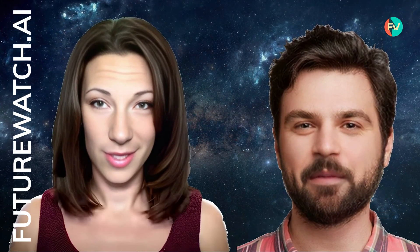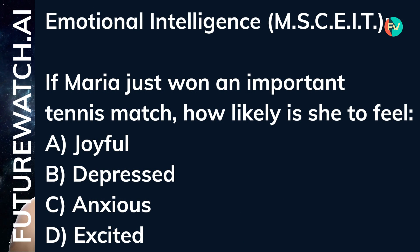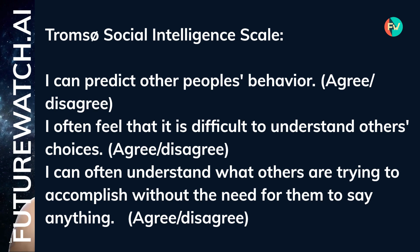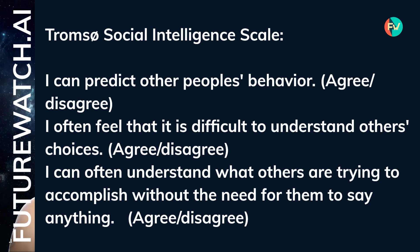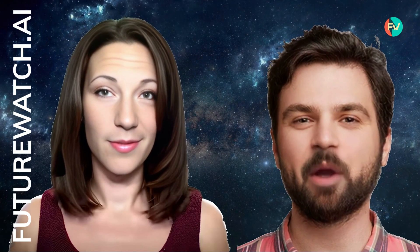Can you give me an example of some test questions? Here are a couple of questions from tests that aim to measure aspects of emotional and social intelligence. Emotional intelligence, MSCEIT test: If Maria just won an important tennis match, how likely is she to feel — A. Joyful, B. Depressed, C. Anxious, D. Excited. Social intelligence, using the Tromso Social Intelligence Scale: I can predict other people's behavior — Agree/Disagree. I often feel that it is difficult to understand others' choices — Agree/Disagree. I can often understand what others are trying to accomplish without the need for them to say anything — Agree/Disagree. As you can see, these test questions aim to assess abilities like reading emotions, understanding social cues, inferring intent, and mental state attribution. However, such discrete questions fail to capture the holistic nature of human socio-emotional intelligence. There are ongoing efforts to develop more naturalistic, comprehensive evaluations.